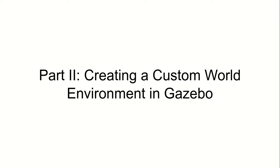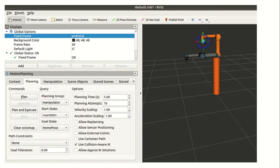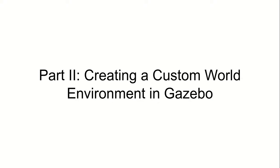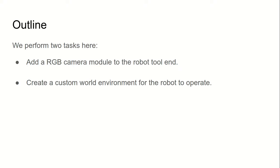Hello everyone. Welcome to the next video in this series where we are talking about how we can simulate a UR5 robot in Gazebo and control it using MoveIt. In the previous video we talked about how to get the robot working in RViz, and now in this part we will first talk about how to create a custom world environment in Gazebo. We perform two tasks here: we add an RGB camera module to the robot tool end, and create a custom world environment for the robot to operate.